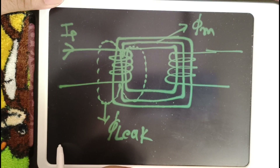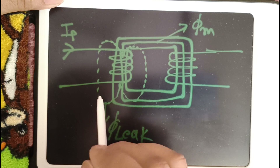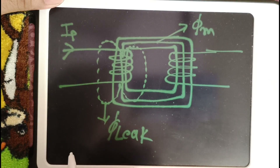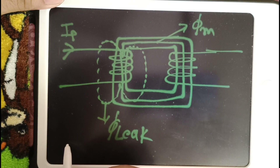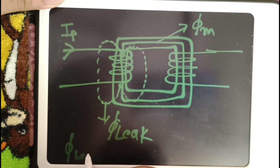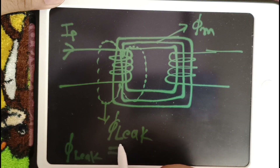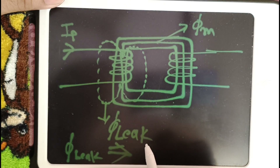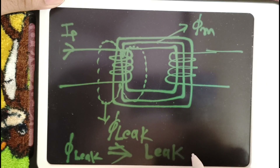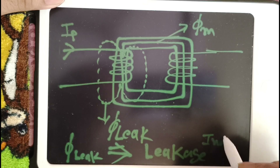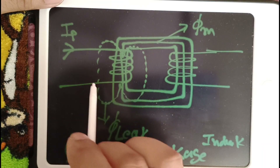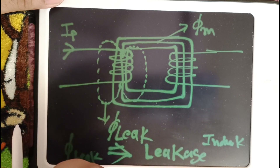Whatever flux is not linking with both coils, that flux is called leakage flux. So phi leak is the leakage flux, and it also represents the leakage inductance. Since this flux is not linking with the secondary coil, this is leakage flux from the primary side.